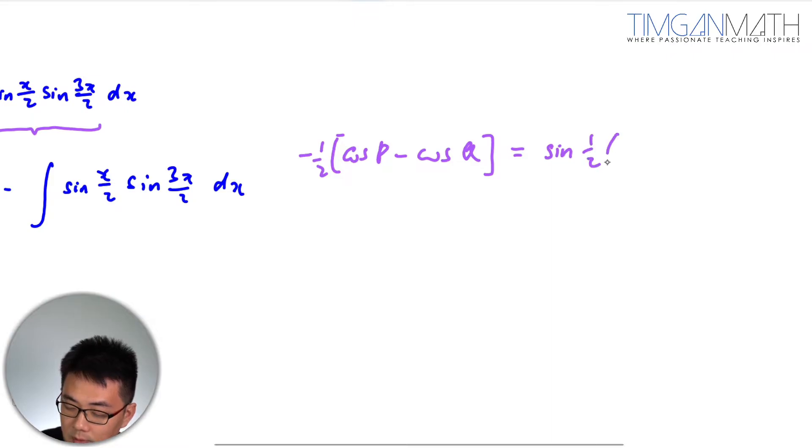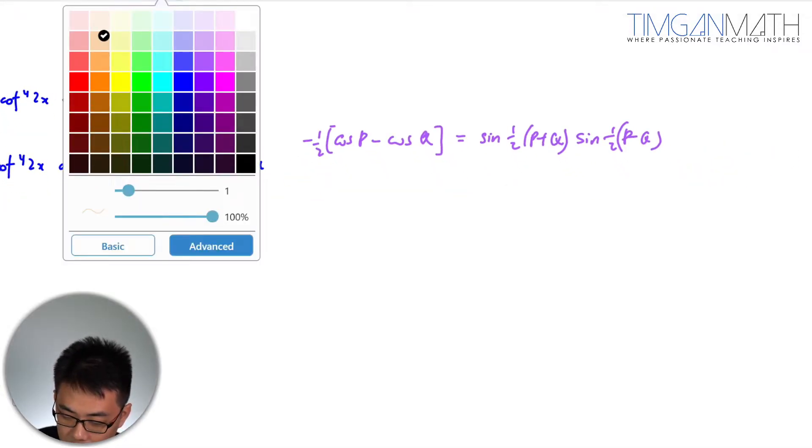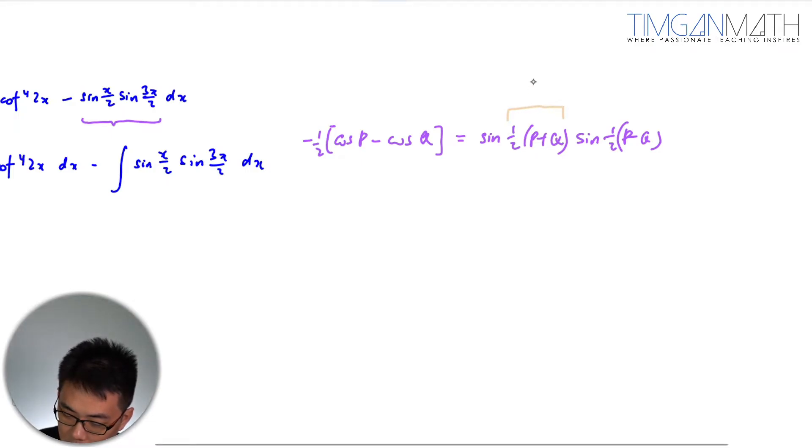Just know that this is your x over 2 and this is your 3x over 2, so you add them you get p and you minus them you get q. All right, so that's the main thing there.